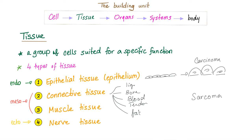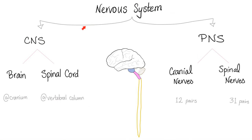Your nervous system is central nervous system and peripheral nervous system. The central includes brain and spinal cord. Anything that comes out of the brain or out of the spinal cord is peripheral. For example, a cranial nerve is a nerve that comes out of the brain — that's peripheral. A spinal nerve comes out of the spinal cord — that's also peripheral nervous system.